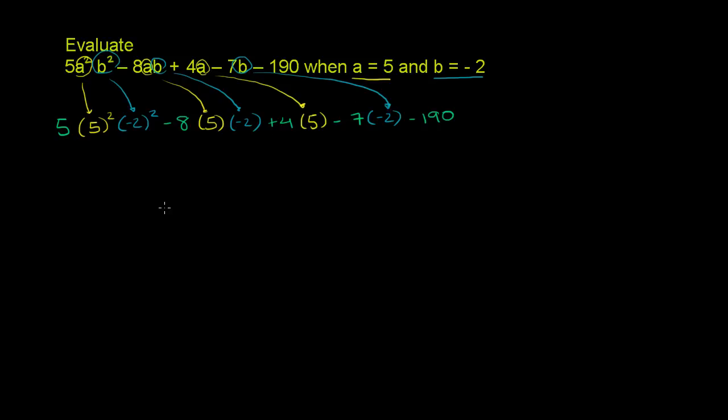And now we just have to evaluate this expression using order of operations. Parentheses always come first, but then exponentiation. So this is going to be 5 times 5 squared. We're going to do 5 squared first. So 5 squared is 25. Negative 2 squared, that is positive 4.